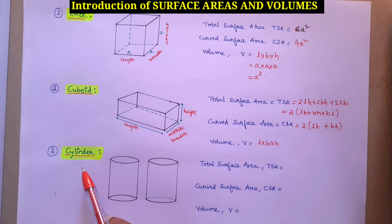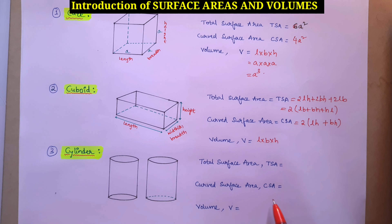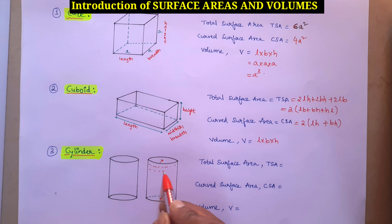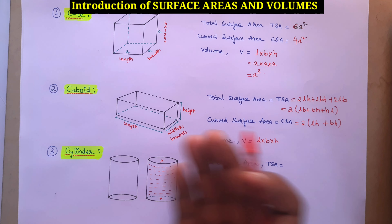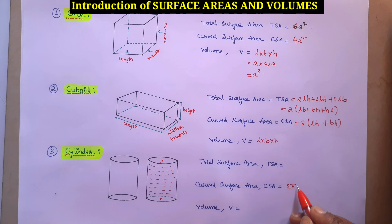The third figure is cylinder. In cylinder, there are two types: total surface area and curved surface area. Curved surface area means we don't include the top and bottom. Only the curved round part, except top and bottom, is considered curved surface area. To find curved surface area, the formula is 2πRH.